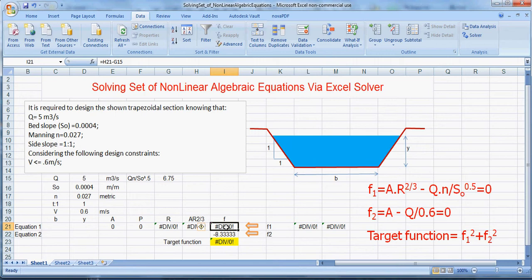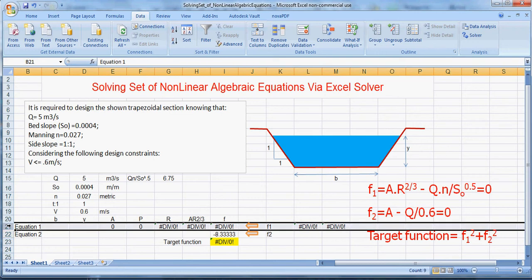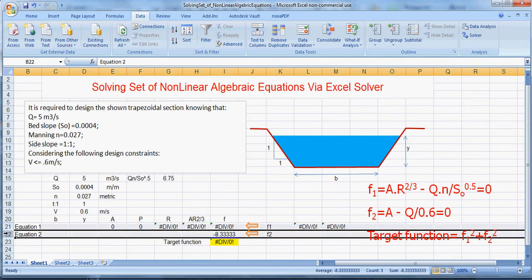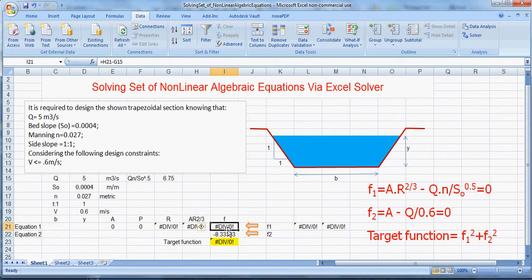Then we calculated the first function F1 and the second function F2. So this row represents equation number 1, this row represents equation number 2, and this is F1 and this is F2. And here we write down the target function.